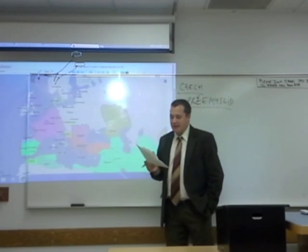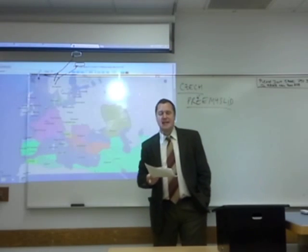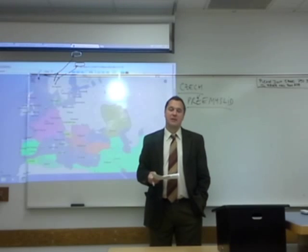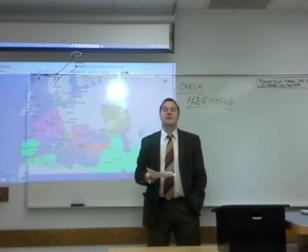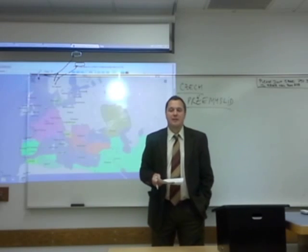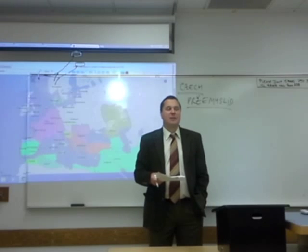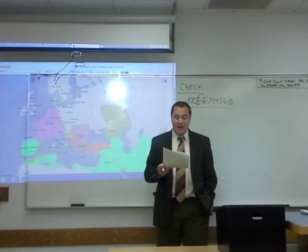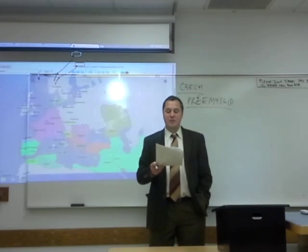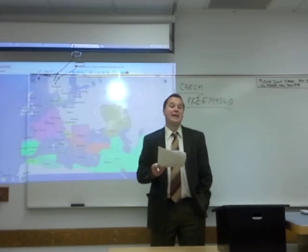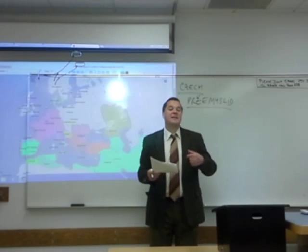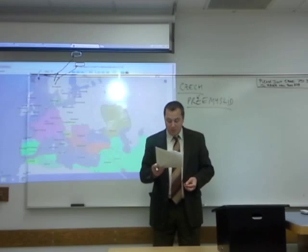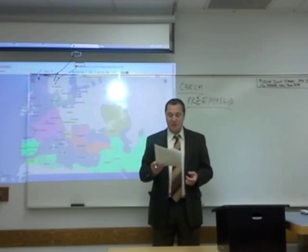The Přemyslid dynasty was founded in the ninth century. What today we call the Czech Republic, or the state called Czechoslovakia, which united today's Czech Republic and Slovakia, is composed of many historical regions. For most of history there was no Czech Republic — it was these regions that had their own form of organization. The two major regions were Bohemia and Moravia. Bohemia comes from the name of a Celtic tribe called the Boi.